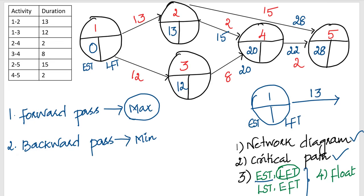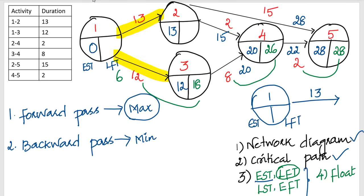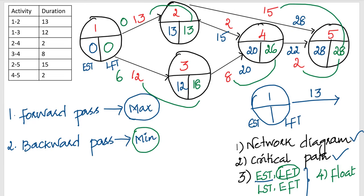For the LFT backward pass, we start with 28 at node 5. Going backwards: 28 − 2 = 26 at node 4, 26 − 8 = 18 at node 3, and 18 − 12 = 6 from that branch. Also 28 − 15 = 13 at node 2, and 13 − 13 = 0. For the backward pass we always take the minimum, so the minimum of 0 and 6 is 0 at node 1. The EST and LFT values on the network diagram are now complete.